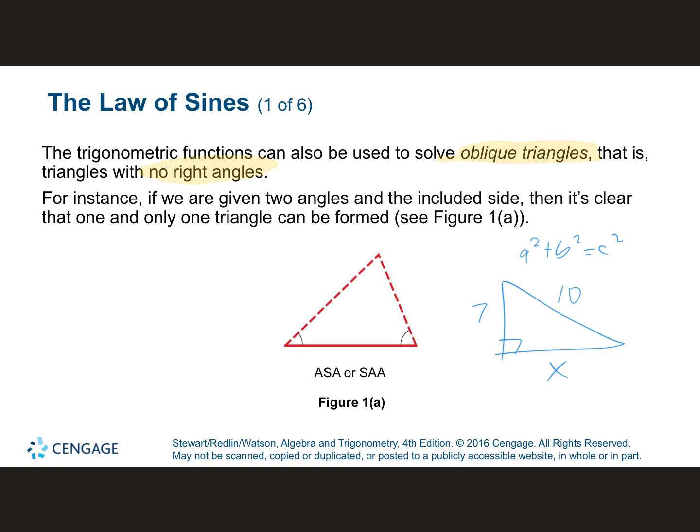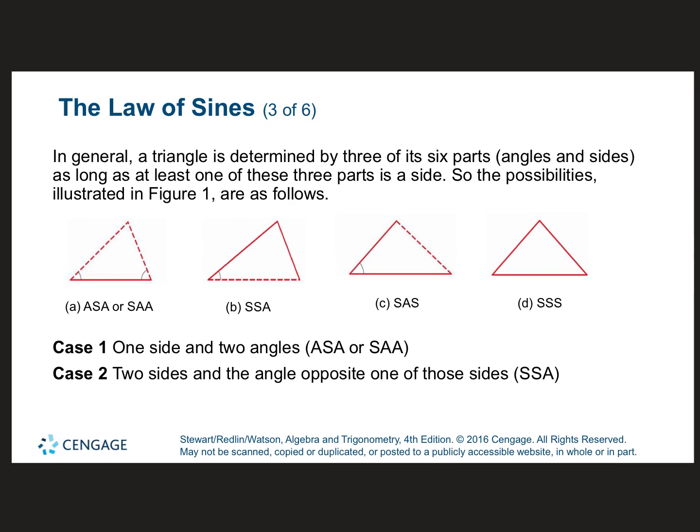You might be given two angles and a side, or two sides and an angle. The Law of Sines is a proportion that allows you to find angle measures and side lengths. What you need to really remember is there are 180 degrees in every triangle. There's going to be a case where you can't use the Law of Sines and you'll have to use the Law of Cosines — we'll talk about that later in the week.